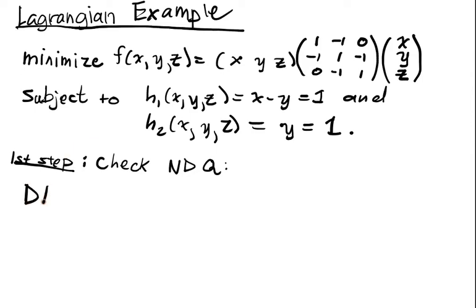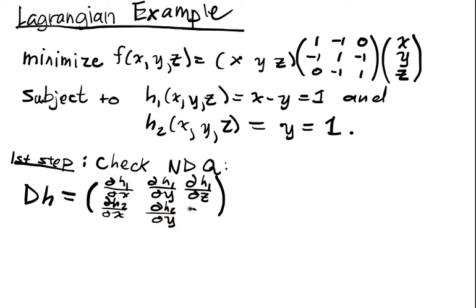So here we'll have that Dh equals, of course, dh1/dx, dh1/dy, dh1/dz, this is just our Jacobian, dh2/dx, dh2/dy, dh2/dz, and we'll easily see that that's 1, -1, 0; 0, 1, 0